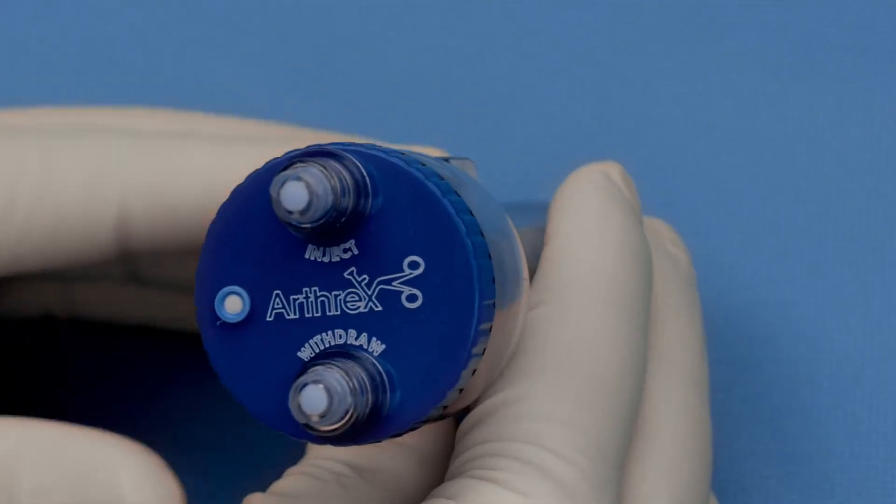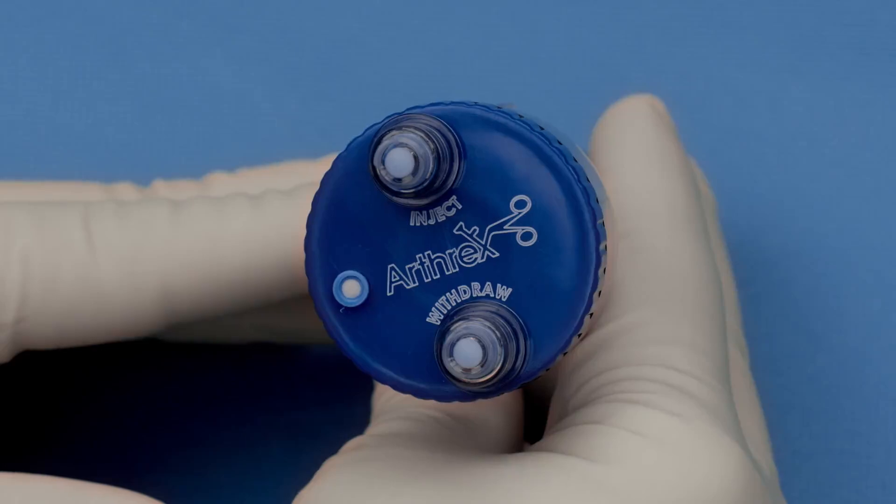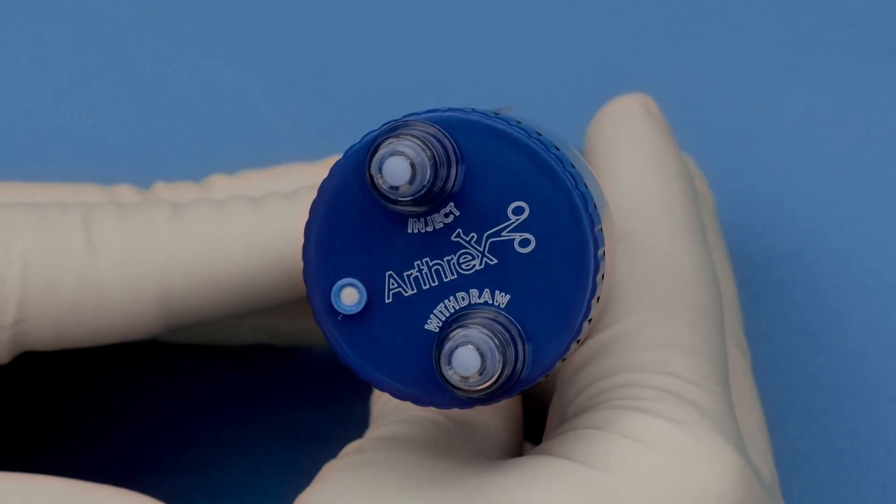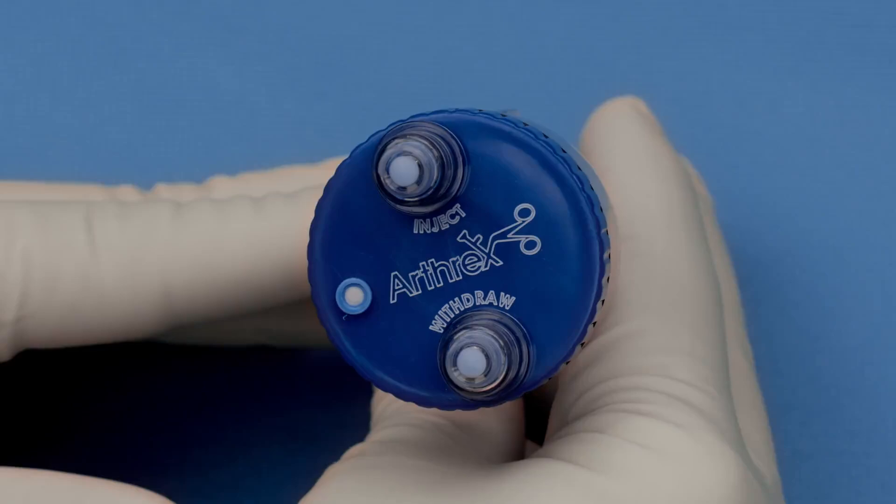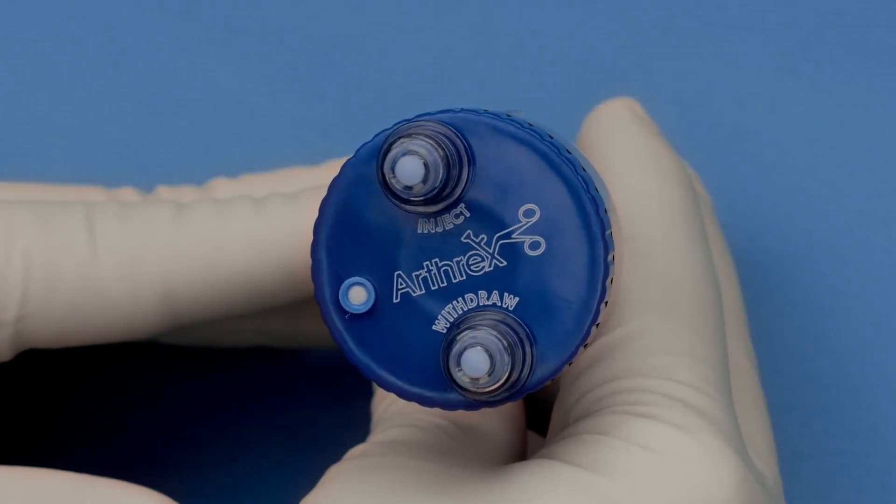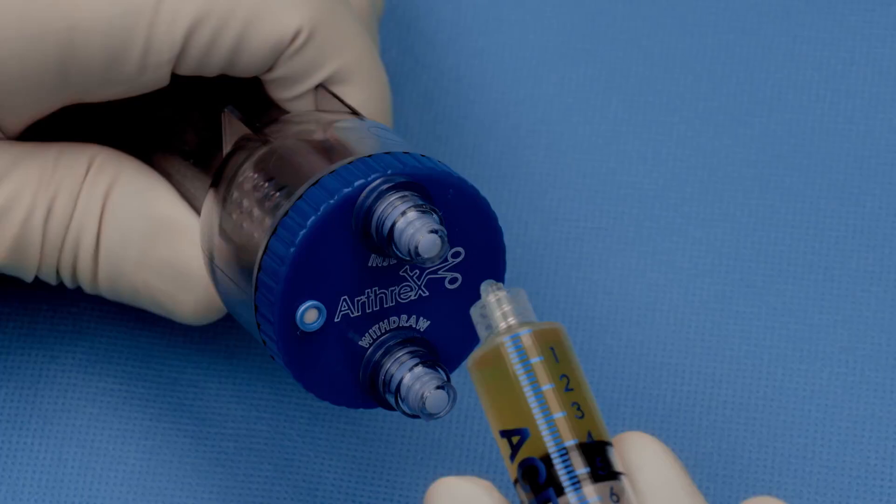On top, the thrombinator has 2 insertion points, one for injection of the ACP and the other one for withdrawal of the autologous thrombin.